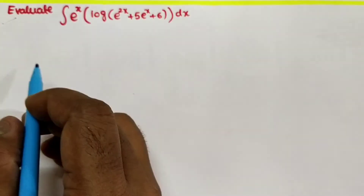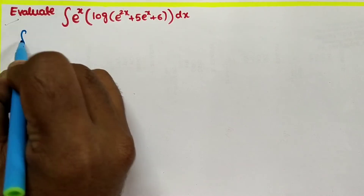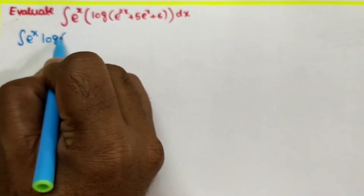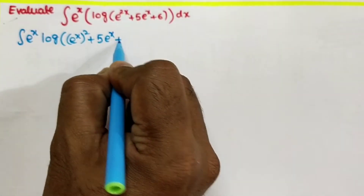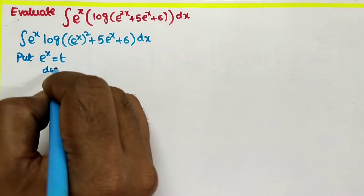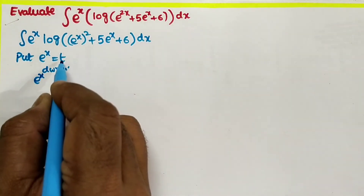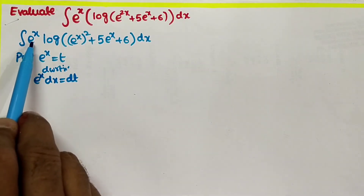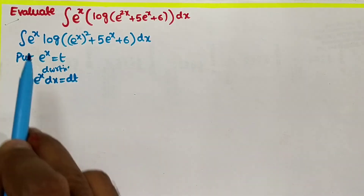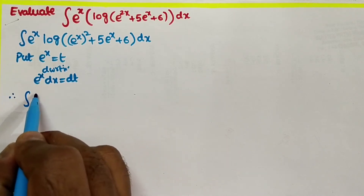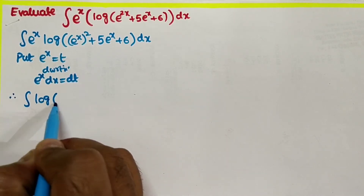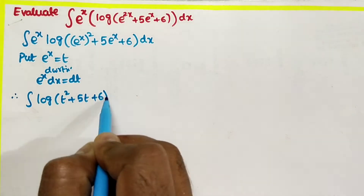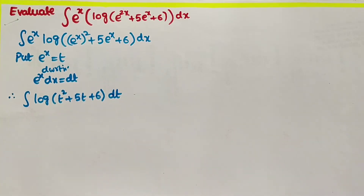First, the given integral ∫eˣ·log(e²ˣ + 5eˣ + 6)dx — note that e²ˣ can be written as (eˣ)². Now put eˣ equal to t, so differentiating with respect to x gives eˣ dx = dt. Therefore dx = dt/eˣ, and replacing eˣ·dx with dt, the integral becomes ∫log(t² + 5t + 6) dt.